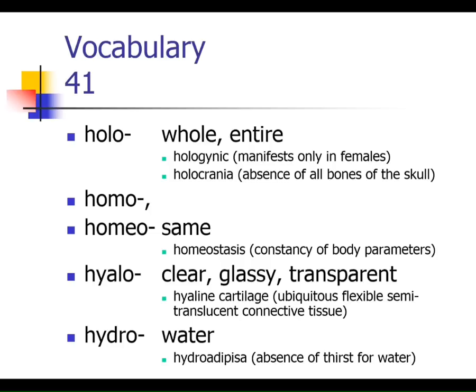For exam four, the vocabulary goes 51 through 70. So for this exam, we're only covering 41 through 50. Starting with 'holo' — we saw 'holocrine' secretion where the entire cell disintegrated, as in sebaceous glands. Then 'homo' and 'homeo,' both meaning 'same.' 'Homeo' we think of in homeostasis.